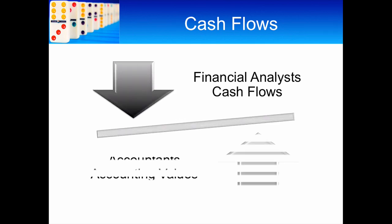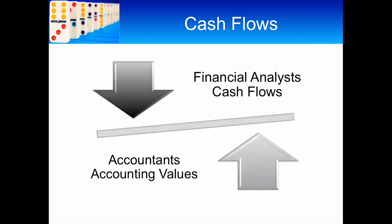We're going to start off by looking at accounting figures. Unless we're using the average accounting return method, you should always use cash flows — do not use accounting figures. The reason is that accounting figures are not real. Earnings is not real; it's a measure of performance based on past experience that incorporates things like depreciation of assets.